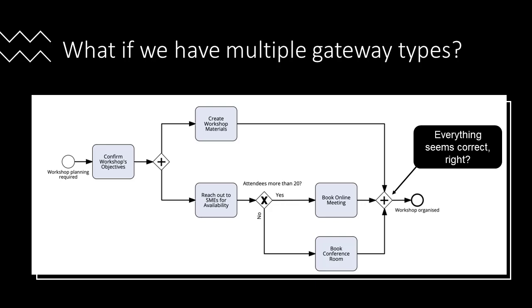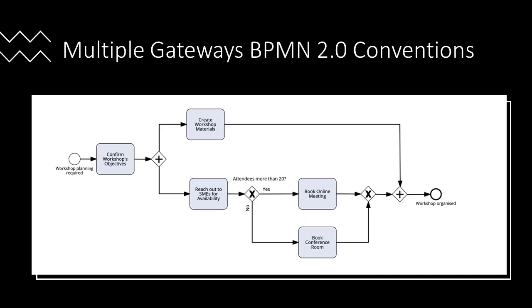As we have learned in our previous videos, each opening gateway should be closed by the same gateway type. In this example we have an opening parallel and an opening exclusive gateway, which means we should have closing gateways for each type. This is the correct way to represent that: first we close the exclusive gateway and only then we close the parallel gateway.